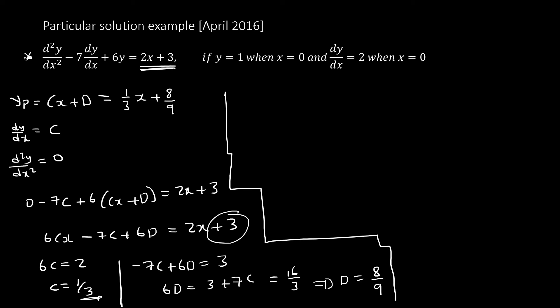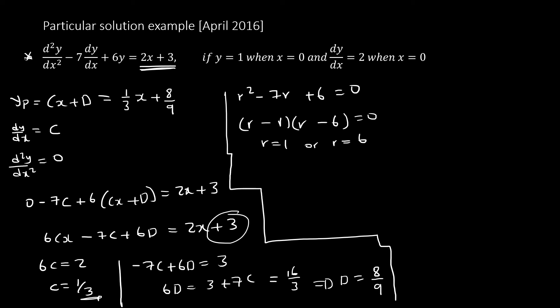Now for yc, the characteristic equation is r squared minus 7r plus 6 equals zero. Factoring gives r equals 1 or r equals 6. Since the roots are not equal, yc equals a·e^x plus b·e^(6x).